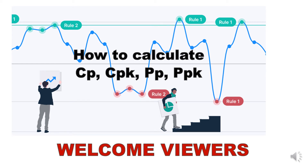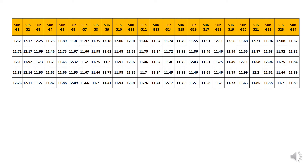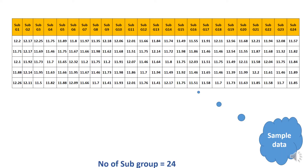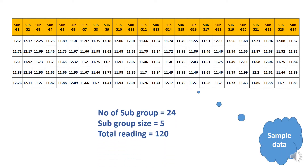Hi, welcome to our channel. How to calculate Cp and Cpk, Pp and Ppk. We are going to calculate Cp, Cpk, Pp, and Ppk for this example data. This is a sample data and the table contains 24 subgroups, with each individual subgroup having five readings, so a total of 120 readings.